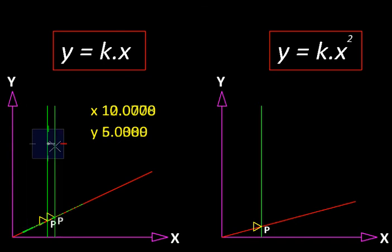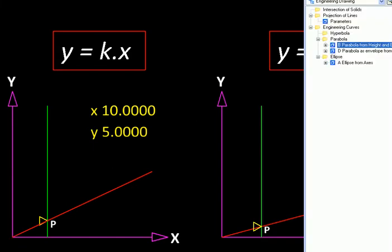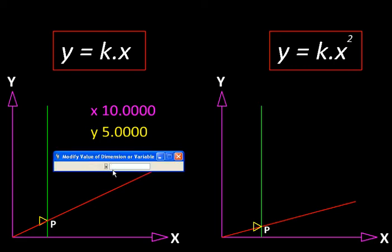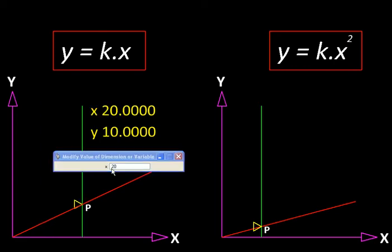the intersection moves, and small wonder, it moves along a straight line. But let us look at the variation here. So, let us change this x-coordinate to, say, something that is twice, 20. You would notice y has also doubled.